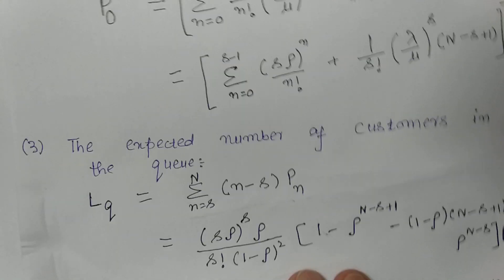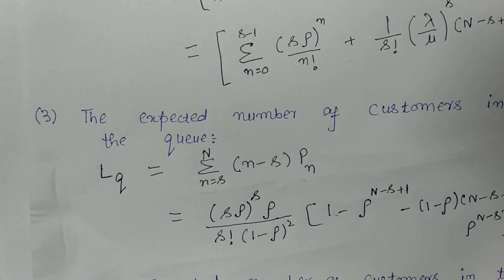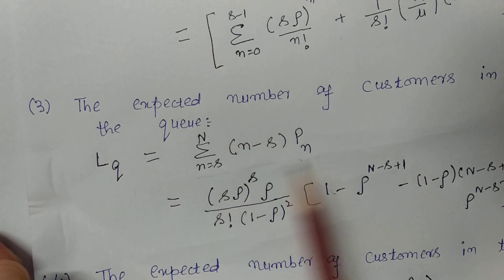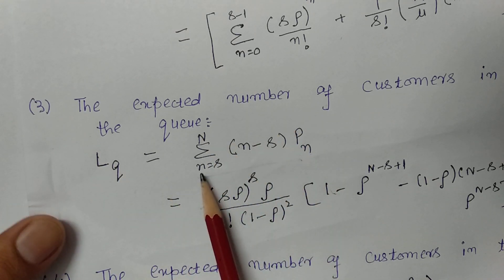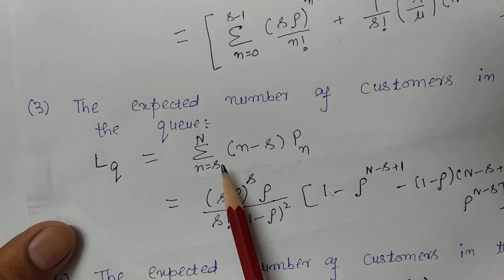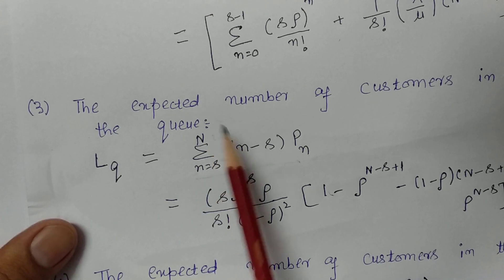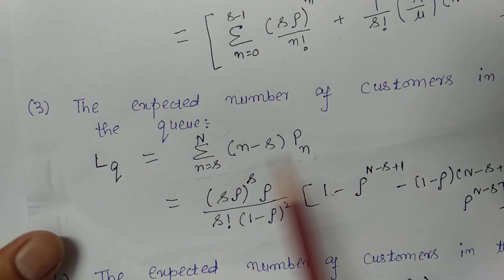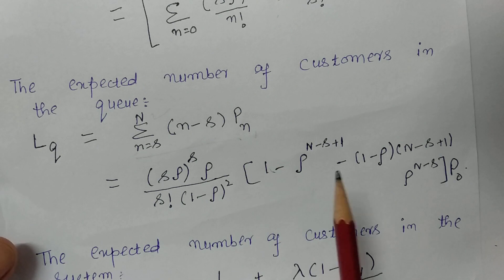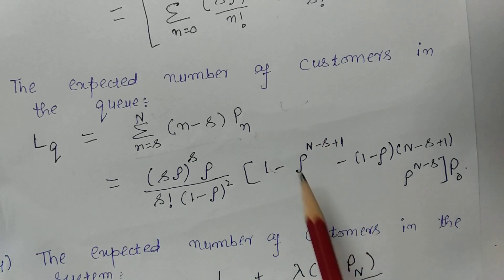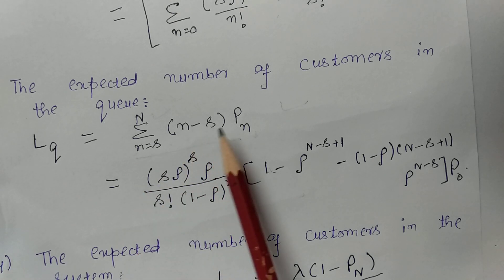The expected number of customers in the queue is L_Q, calculated as the summation from N = S to capital N of (N − S) × P_N. After simplifying, this yields S × ρ^S × ρ divided by S! × (1 − ρ)² multiplied by associated terms. For examination purposes, the simplified form is easier to memorize.